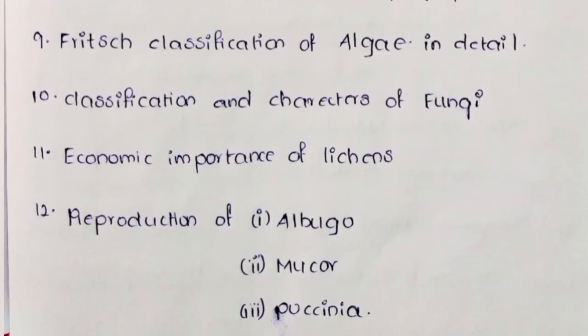Ninth: Fritsch's Classification of Algae in Detail. Tenth: Classification and Characters of Fungi. Eleventh: Economic Importance of Lichens. Twelfth: Reproduction of Albugo.